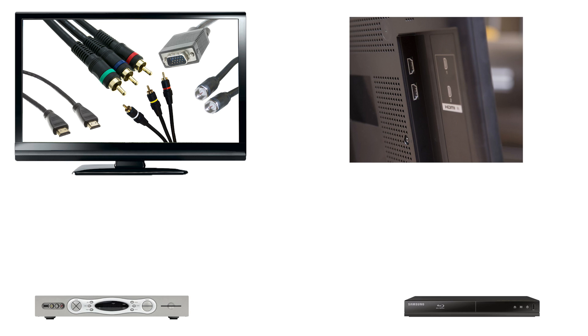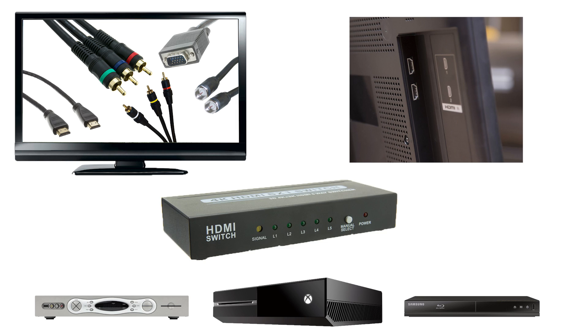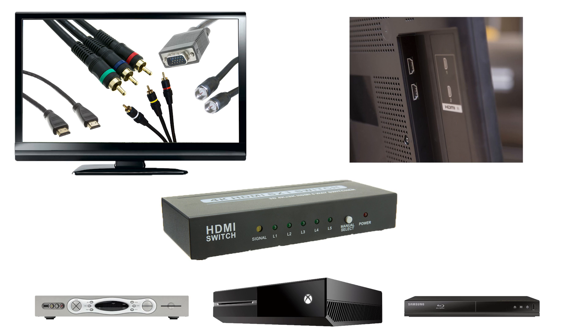Now let's talk about a switch. A switch will allow you to add additional video inputs to a display that does not have any free ports available. Let's say your television has two HDMI inputs — you have your cable box in one port and a Blu-ray player in the other. For your birthday you received a game console, but you don't have any free ports. A switch gives you the ability to add more devices to your already full TV. Instead of connecting your devices directly to the TV, you plug all of your devices into the switch. Then, from the switch, one cable connects to your TV's port. To select which device is displayed on the TV, you make the change via the switch.